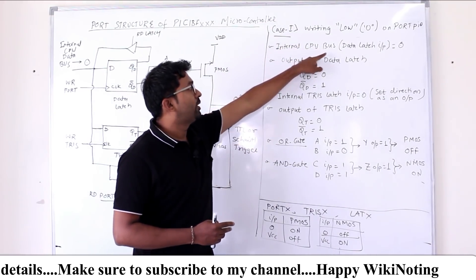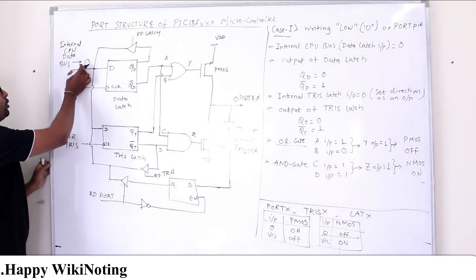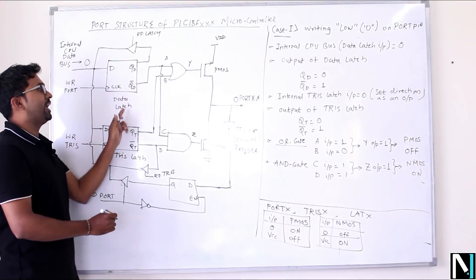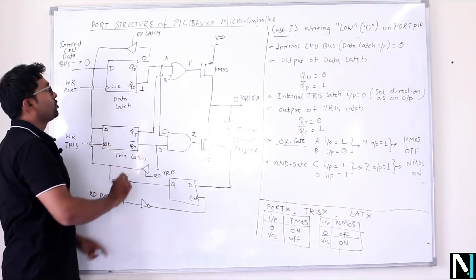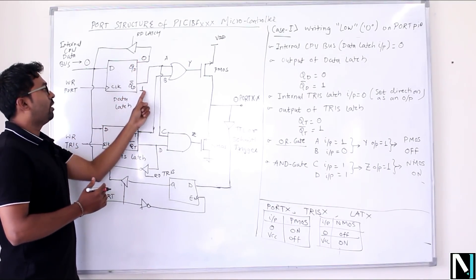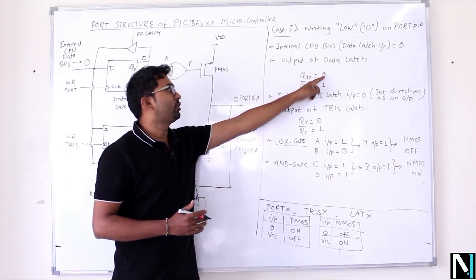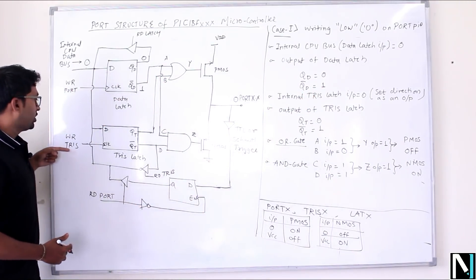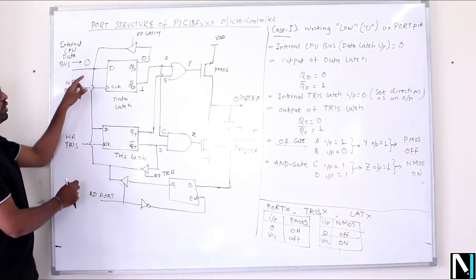In Case 1, the internal CPU bus data latch input is zero — the CPU is writing zero. The output of the data latch flip-flop will therefore be: QD equals zero and QD-bar equals one. So the output of the data latch: QD = 0 and QD-bar = 1.